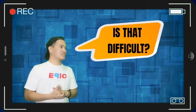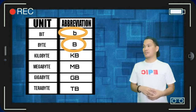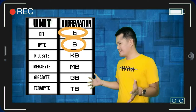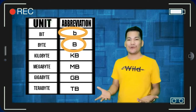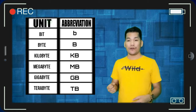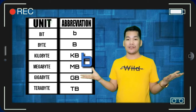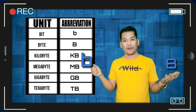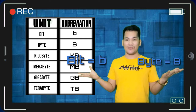Is that difficult? No. And for you to understand, take a look at this. There are two B's in the abbreviation. In order for you to understand the abbreviation, just take note of this: for bits, small letter b; and for bytes, capital letter B.